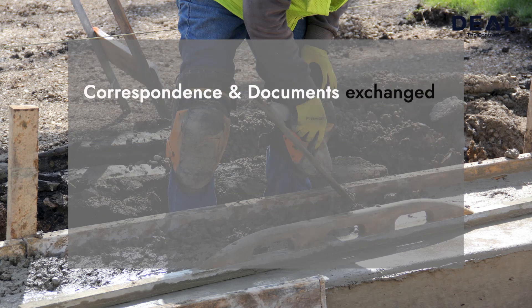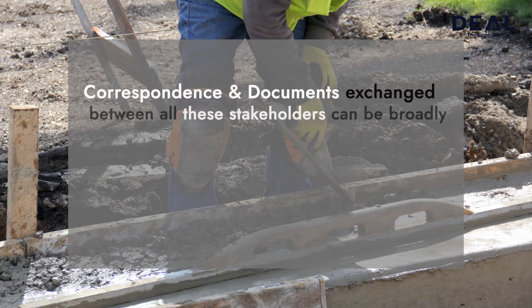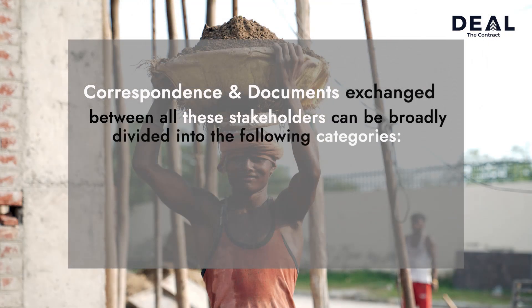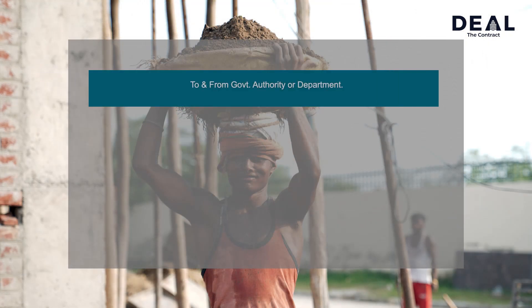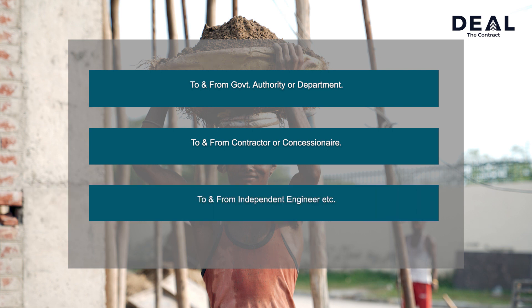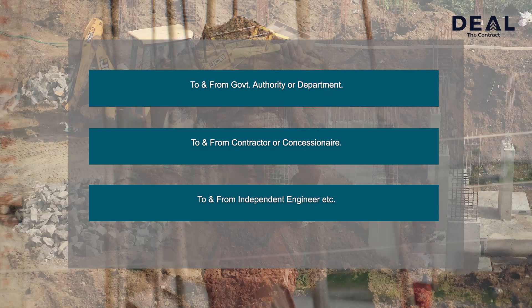Correspondence and documents exchanged between all these stakeholders can be broadly divided into the following categories: one, to and from government authority or department; two, to and from contractor or concessionaire; three, to and from independent engineer; etc.